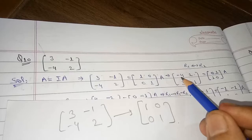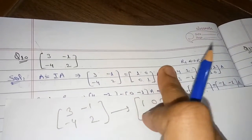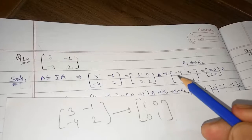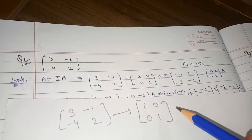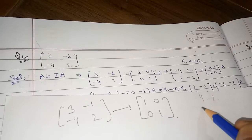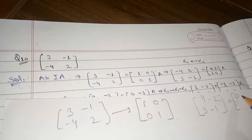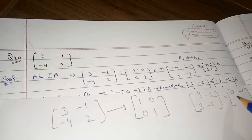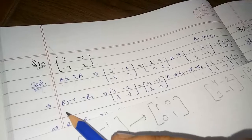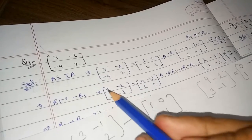Now we want 4 to be higher than 3, but we need to remove the minus sign from -4. So we multiply row 1 by -1. This gives us row 1 as [4, -2] while row 2 stays as [3, -1]. On the right-hand side, row 1 becomes [0, -1] and row 2 remains the same. Now we can see that 4 in row 1 is higher than 3 in row 2.